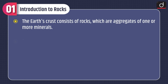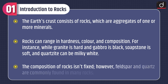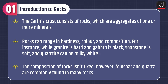Moving on to the introduction of rocks. The Earth's crust consists of rocks, which are aggregates of one or more minerals. Rocks can range in hardness, color, and composition. For instance, while granite is hard and gabbro is black, soapstone is soft and quartz can be milky white. The composition of rocks is not fixed; however, feldspar and quartz are commonly found in many rocks.